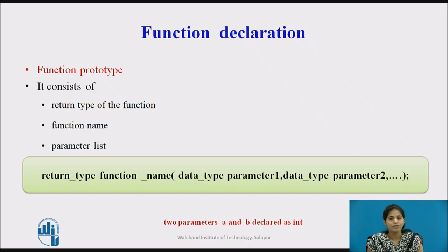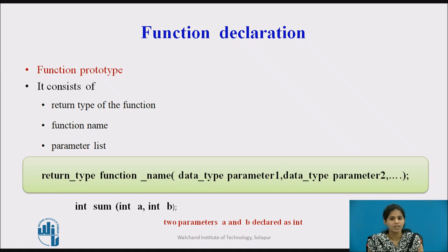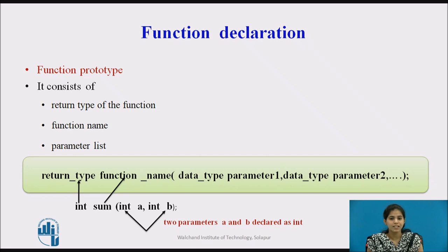Now let us see the syntax of function declaration. Initially we declare the return type, followed by the function name and the parameter list. Consider a simple example for calculating the sum of two integer numbers. Here we observe how the function is declared: integer sum, where int is the return type, sum is the function name, and a and b are the parameter list.